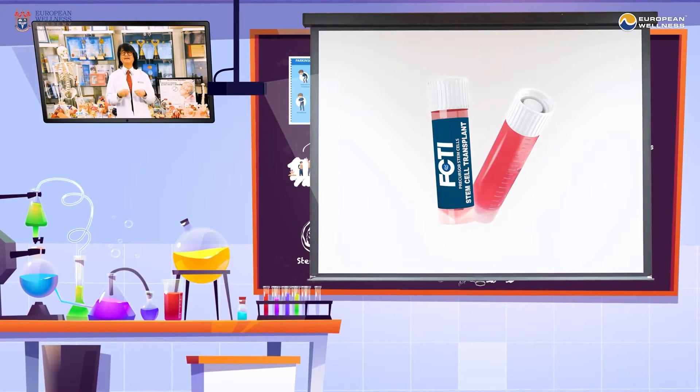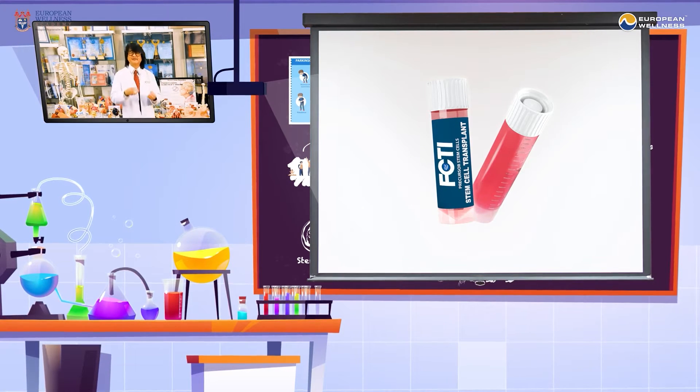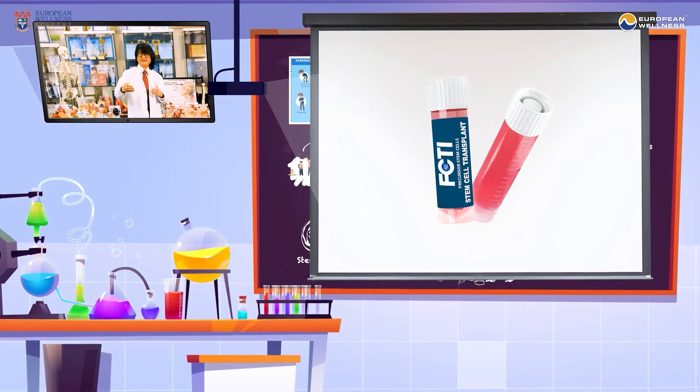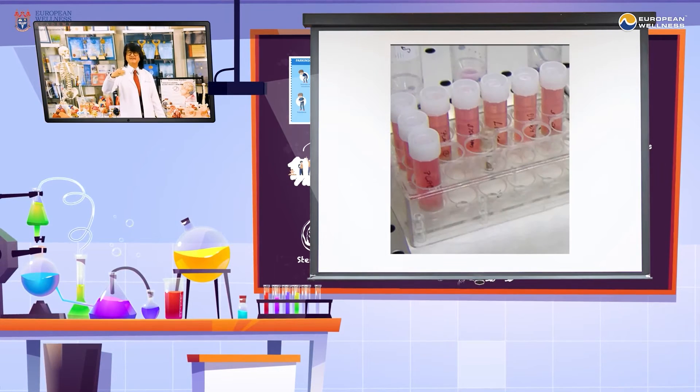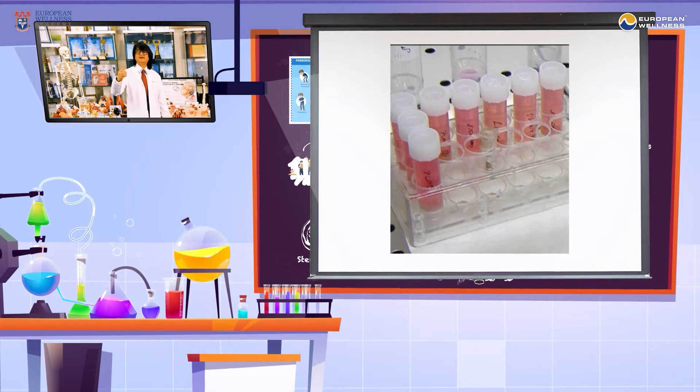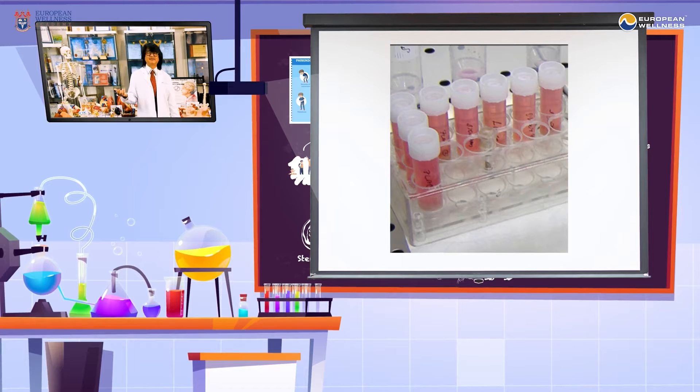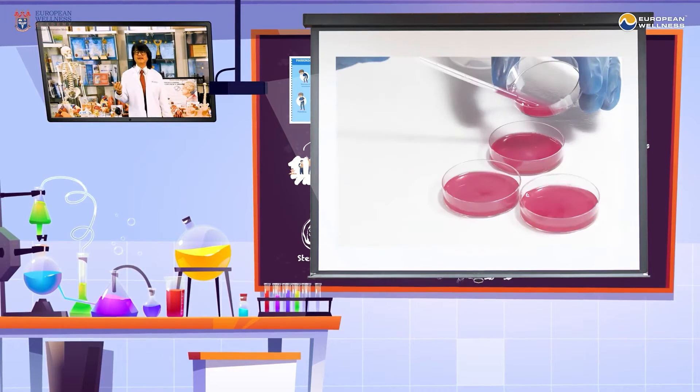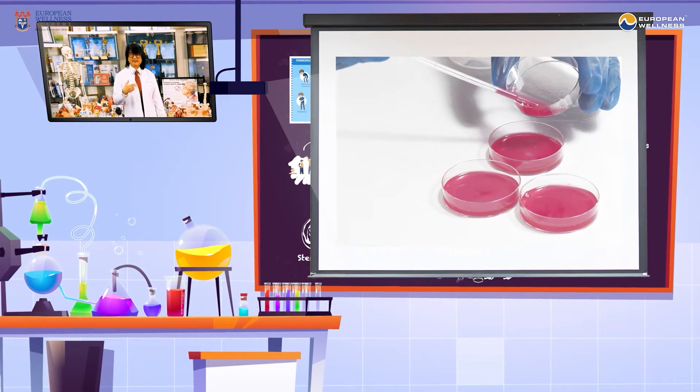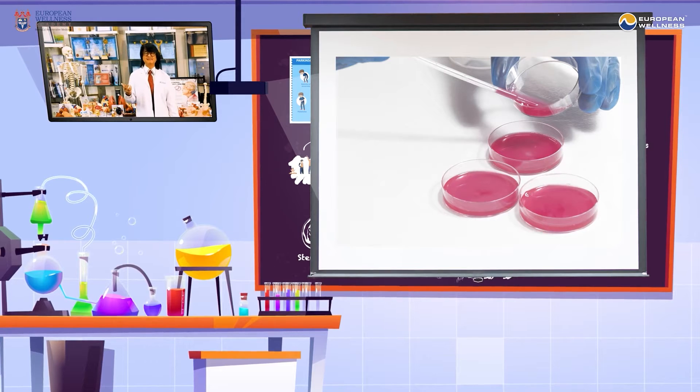With this technology, we can even produce stem cells of the different parts of the brain for the different areas of damages in the brain. For instance, cells of the pituitary gland, hypothalamus, brain cortex, amygdala, cerebellum, pineal gland and many others, all the 75 different stem cells in the brain.